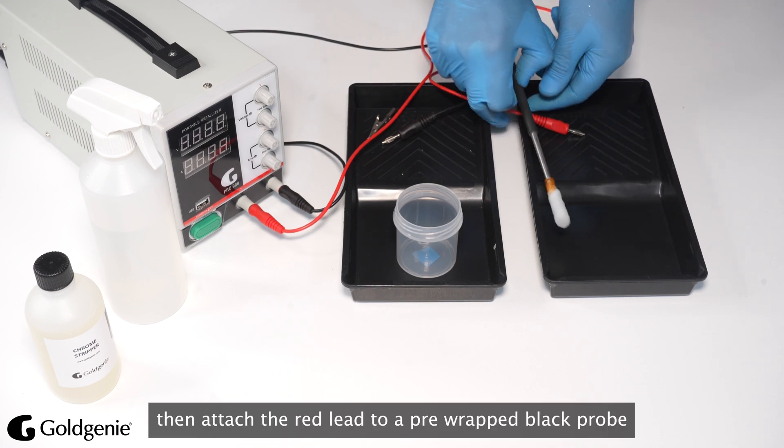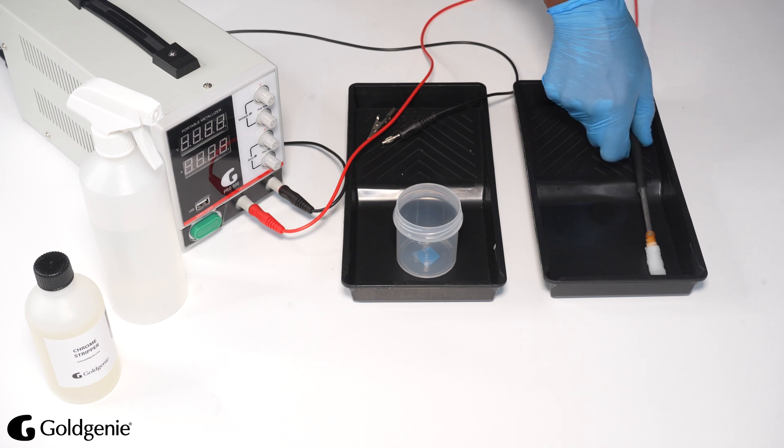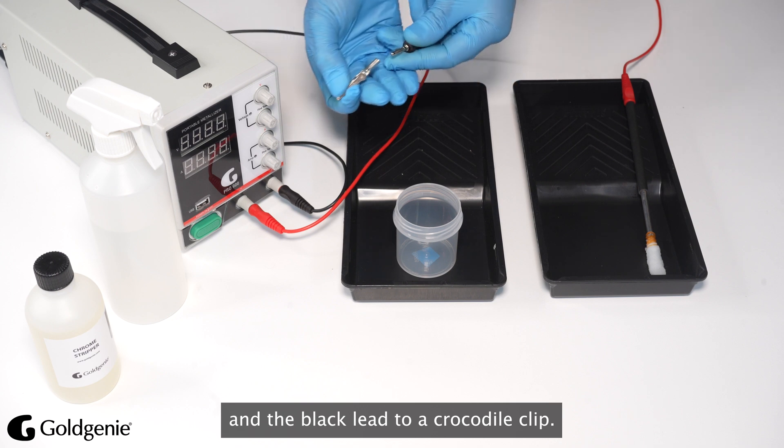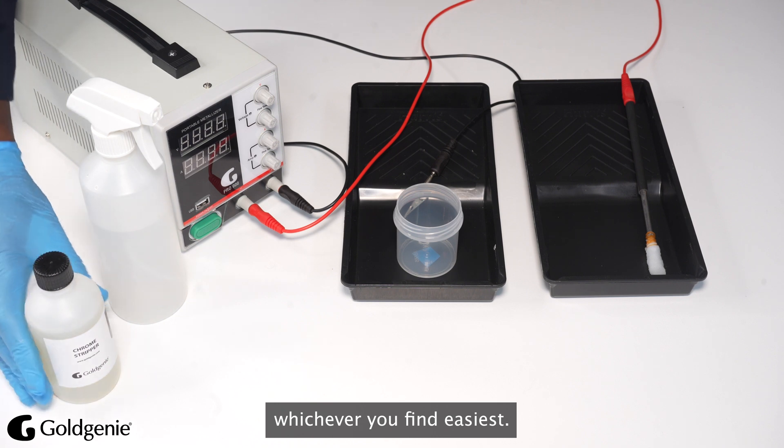Then attach the red lead to a pre-wrapped black probe and the black lead to a crocodile clip. The item could be attached to a probe, whichever you find easiest.